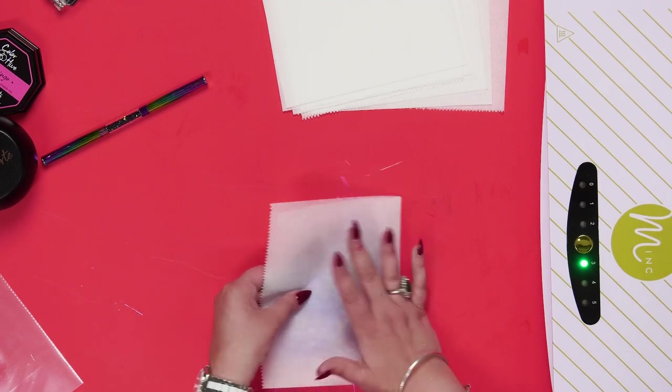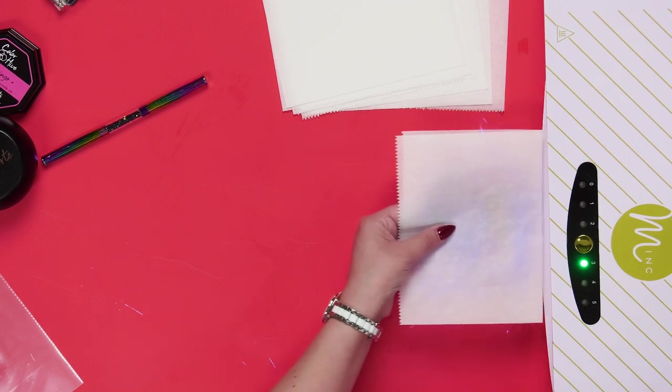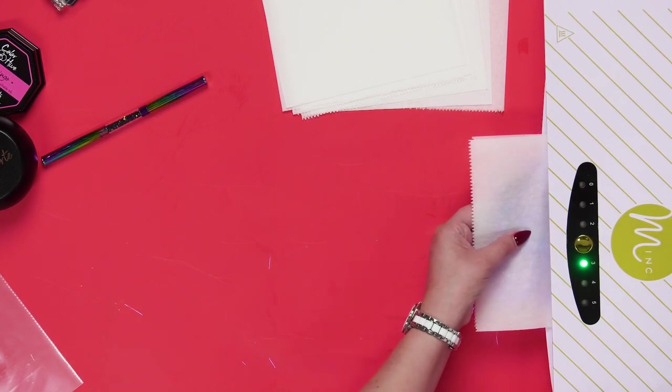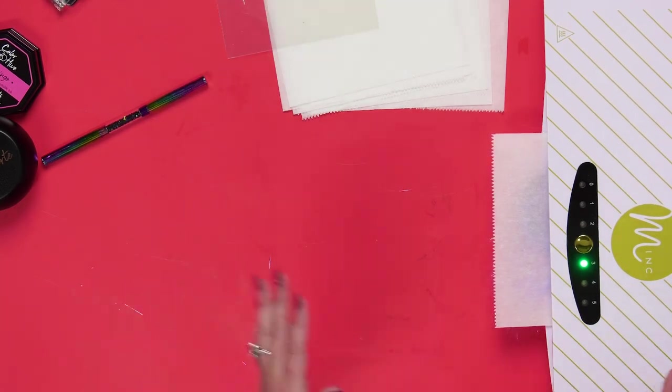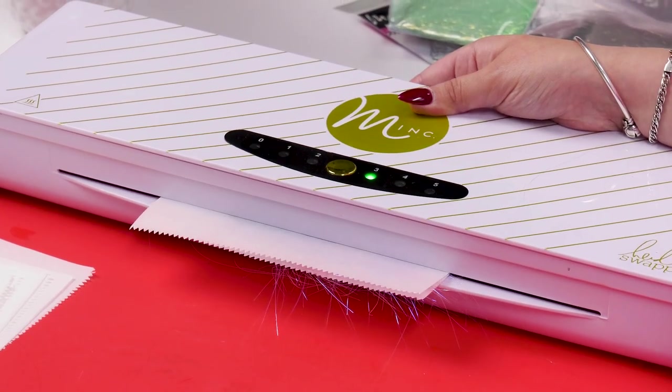I like these because nothing's going to stick to them because of that silicone coating that is on the paper. Sometimes I've had some issues with stuff sticking to this, but you can absolutely use those if that's what you have in your craft room. But I recommend the silicone coating. We're going to just run it through your Minc machine.